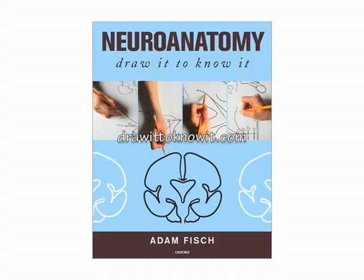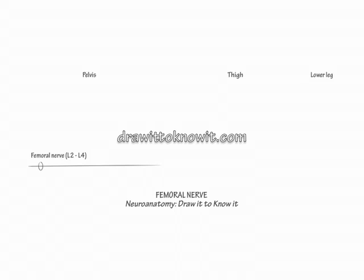To draw the femoral nerve, label across the top of the page from left to right as pelvis, thigh, and lower leg. Show the femoral nerve pass through the pelvis and into the thigh, and indicate the L2 to L4 nerve roots form it.